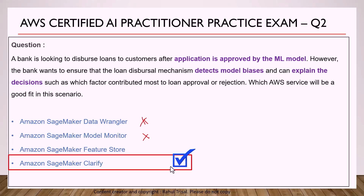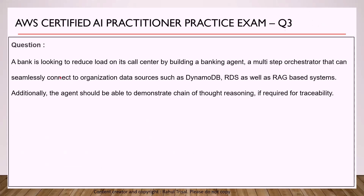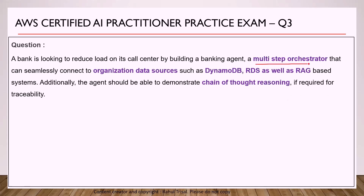The third question: a bank is looking to reduce load on its call center by building a banking agent — a multi-step orchestrator that can seamlessly connect to organization data sources such as DynamoDB and RDS, as well as RAG-based systems. Additionally, the agent should be able to demonstrate chain-of-thought reasoning if required for traceability. The key concepts are: multi-step orchestrator, connecting to data sources like DynamoDB and RDS, and chain-of-thought reasoning.